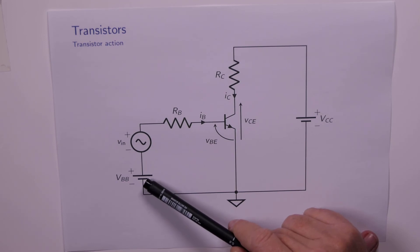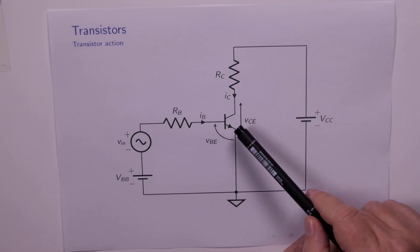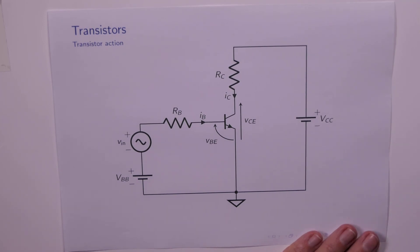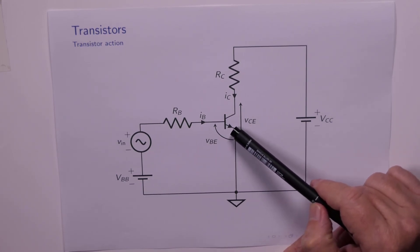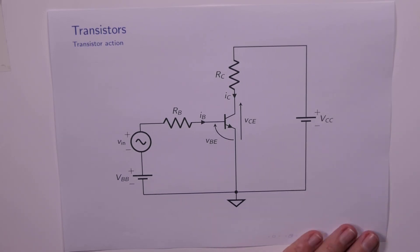We've got a DC voltage source in series with a little AC voltage source connected via RB to our transistor. We've got our collector resistor connected to VCC. We don't necessarily know what all of these things are for yet, but I can tell you that VBB is required so that the transistor stays on. Remember, in order for the transistor to be on we need the base emitter voltage to be around about 0.7 of a volt.